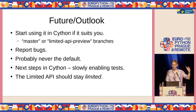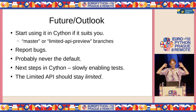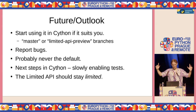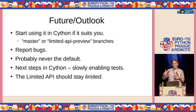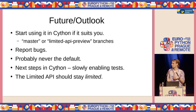Start using it in Cython if it suits you. Use the master branch for now, and please report bugs. It probably won't be the default. The next step in Cython is to start slowly enabling tests. My view is the limited API should stay limited, mainly so people aren't tempted to break the promise of the stable ABI — which is what you want.